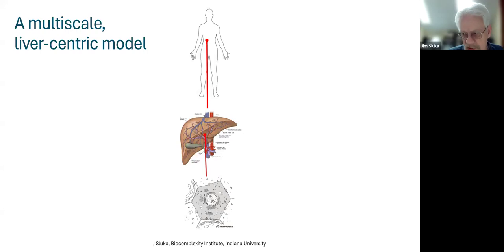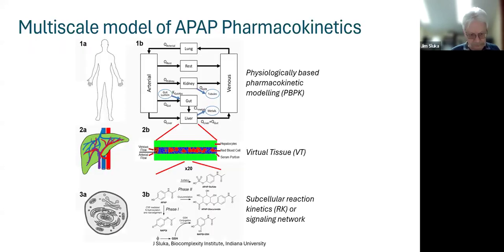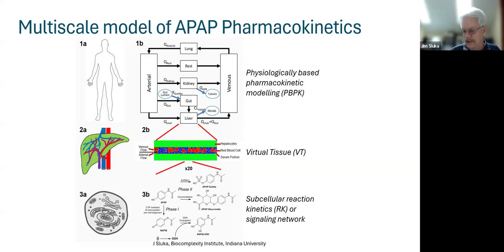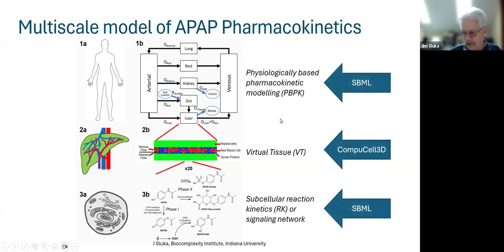Here's the start of our multi-scale model. We'll have a scale for the whole body, a scale for the liver, and a scale for individual cells within the liver. At the whole body scale, we'll use physiologically-based pharmacokinetic modeling (PBPK) — an ODE-based approach. At the tissue scale, we'll use a virtual tissue in CompuCell 3D, which includes blood flow and cells. At the subcellular metabolic level, we'll use ODEs for subcellular signaling and metabolism of acetaminophen.